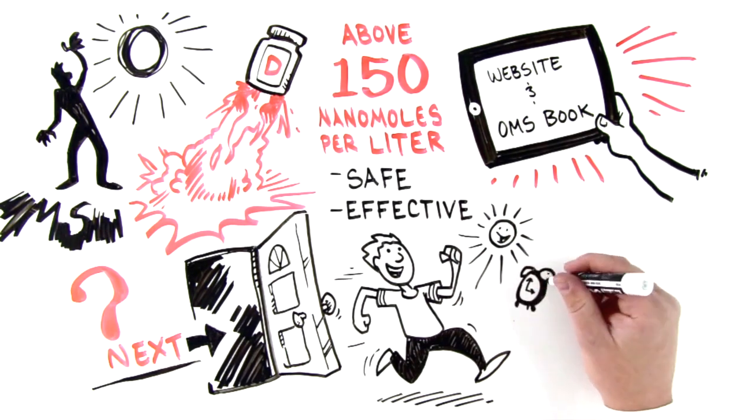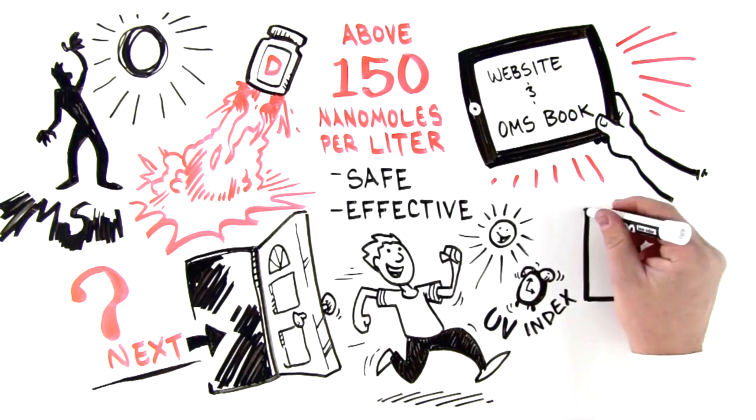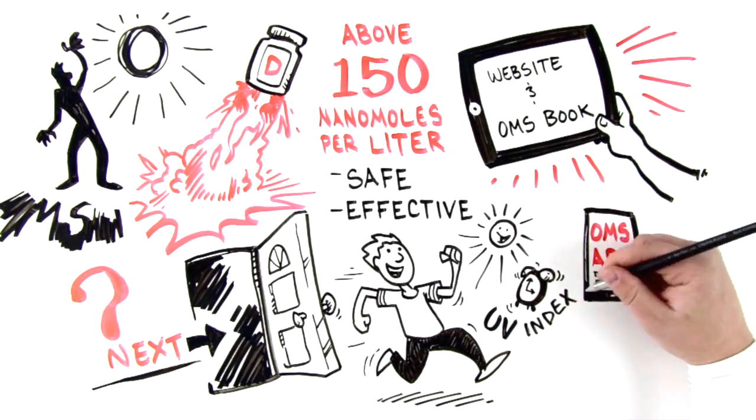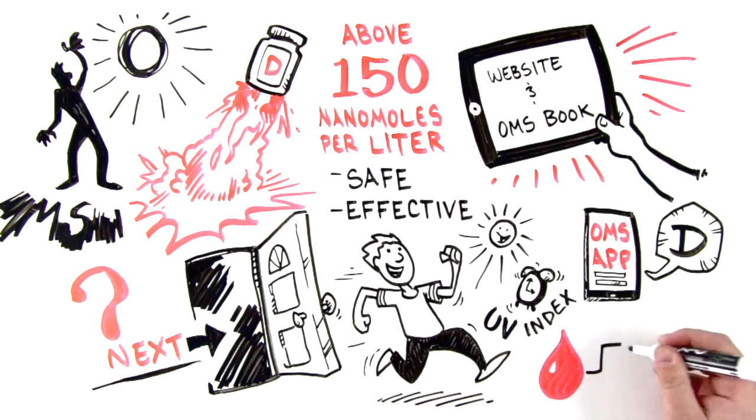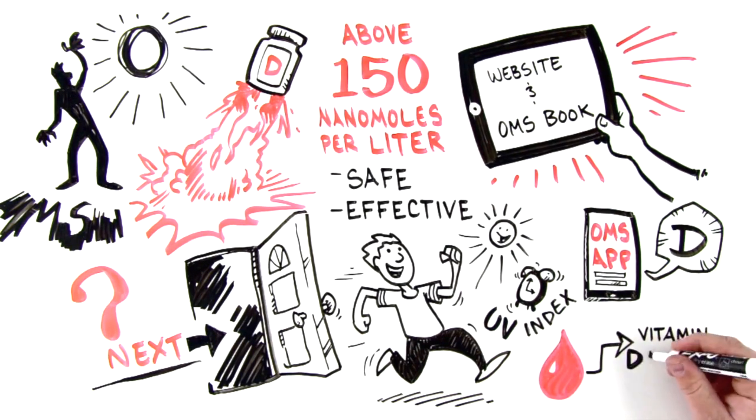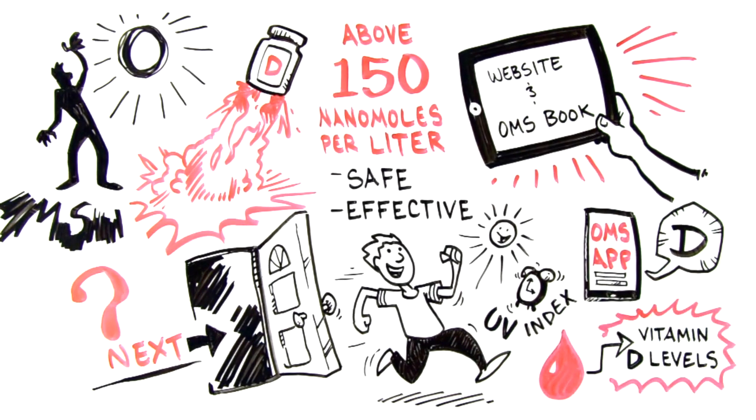Set your OMS smartphone app to remind you to take vitamin D supplements and to check the UV index for the day. And get your blood tested annually at the end of winter to check your vitamin D levels and to make adjustments to your intake accordingly.